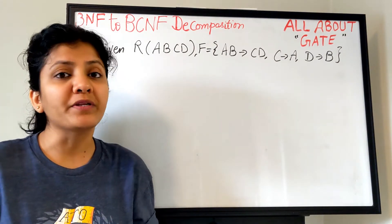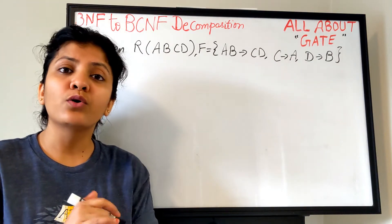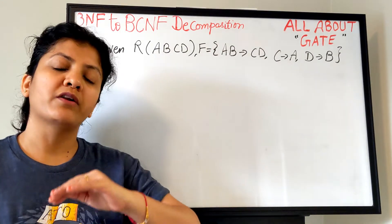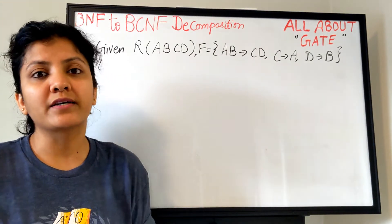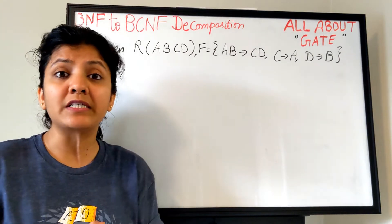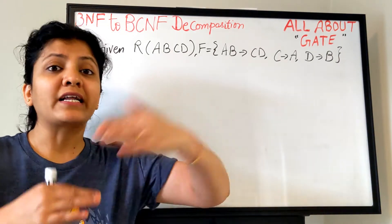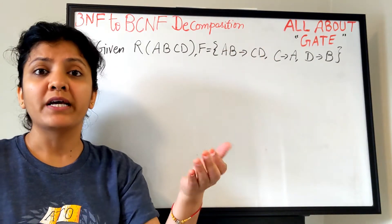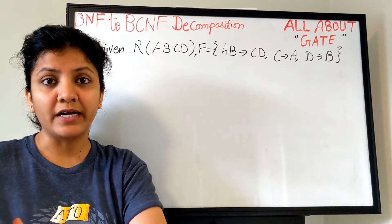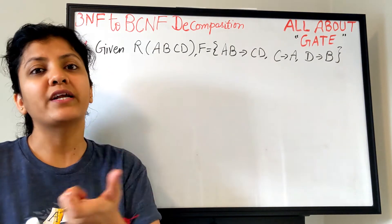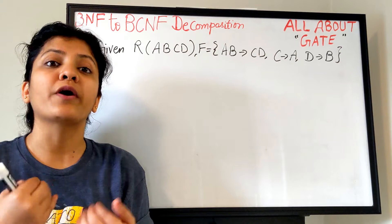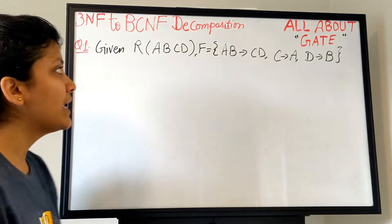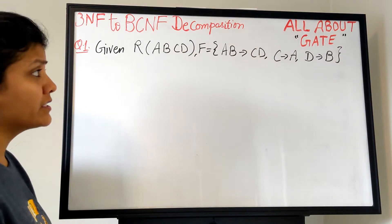As I mentioned in the previous video, there is no difference in decomposing from any lower normal form to a higher normal form. The only basic concept is: whatever functional dependency is creating a violation for the higher normal form, just make a separate relation for that, and at the end find a new joining relation R which makes the join happen.